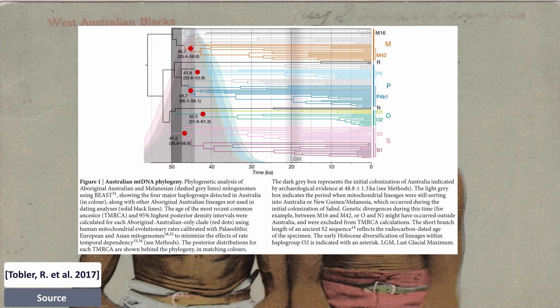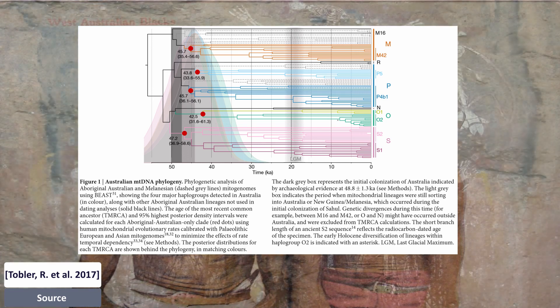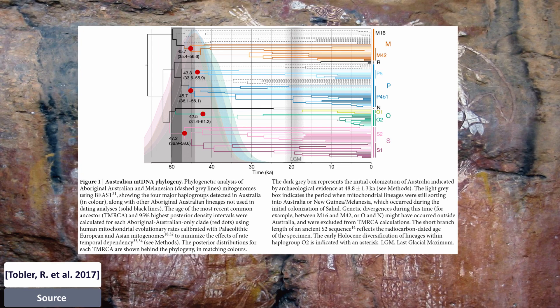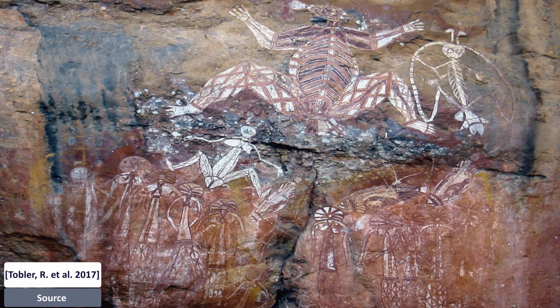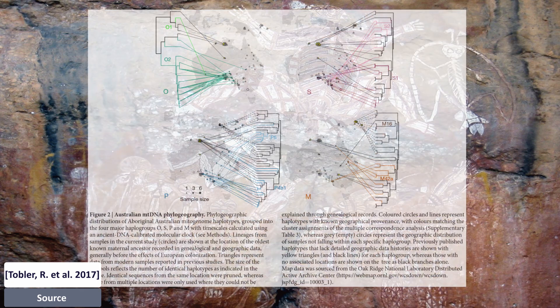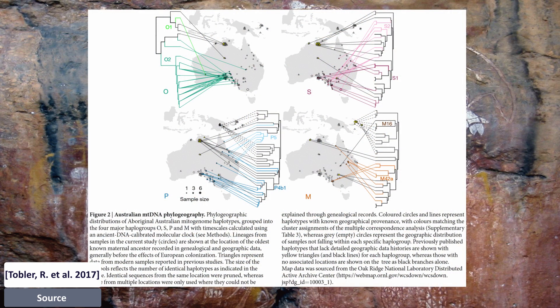They construct a model of the peopling of Australia combining genetic and archaeological data, showing approximate and stylized coastal movements of haplogroups O and R to the west, and PS and M to the east.